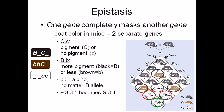Normally in Mendel's dihybrid cross, the ratio for phenotypes should be 9:3:3:1, but in this epistatic situation it becomes 9:3:4. There are many varieties of epistasis. This particular example is recessive epistasis — when both alleles are recessive, you get the modified ratio of 9:3:4 instead of the standard Mendelian ratio.